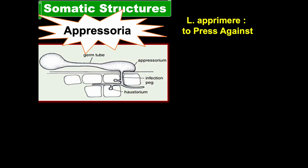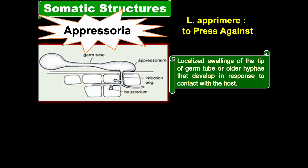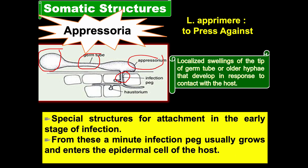Another important somatic structure is the appressorium. The word came from the Latin 'apprimere' meaning to press against. These are localized swellings at the tip of a germ tube or hyphae that develop in response to contact with the host. After the conidia and germ tube, the appressorium forms, and with this structure the fungus puts pressure on the host cell so that the host cell breaks down and the fungus penetrates inside. Infection pegs then develop and are considered specialized structures for attachment in the early stage of infection.